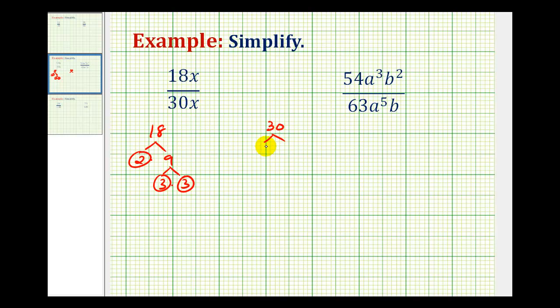So for 30, we'll have 3 times 10. 3 is prime. For 10, we'll have 2 times 5, and these are both prime.